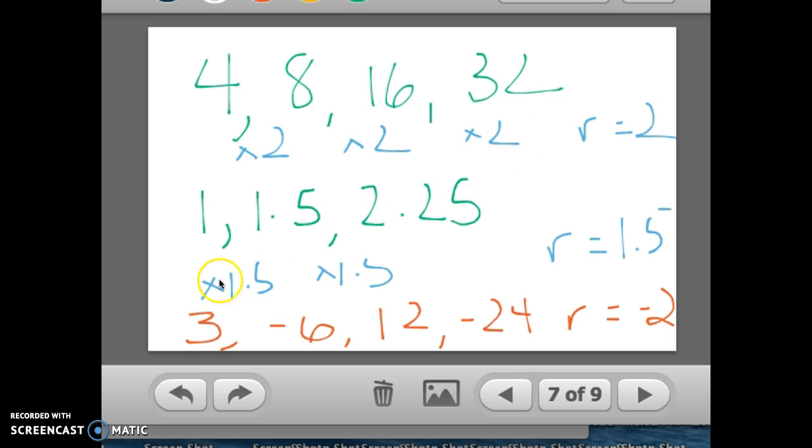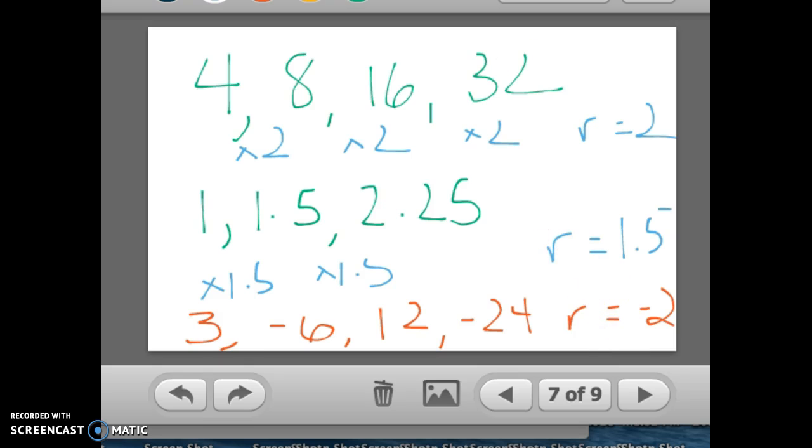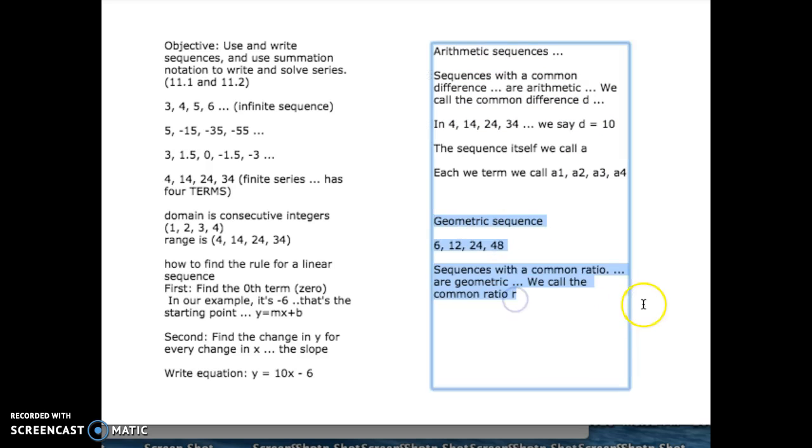times 2, times 2, times 2, times 1.5, times 1.5. Well, we call that a common ratio. And if it has a common ratio, it's a geometric sequence. Geometric sequences, sequences with a common ratio are geometric, we call the common ratio R. All right, and that is part one of our coverage of section 11.1.